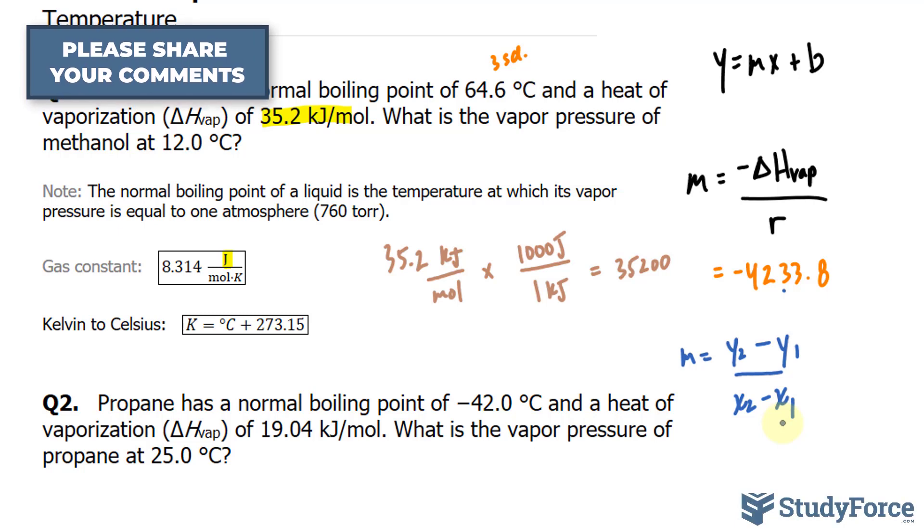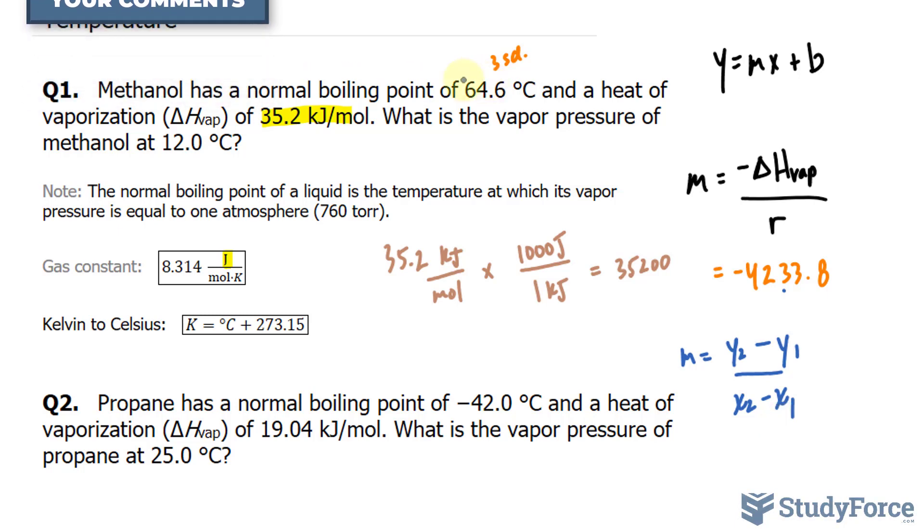Now they've given us two points. The first is 64.6. And since we're told that it has a normal boiling point, that means the pressure is 760 torr.